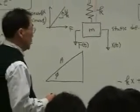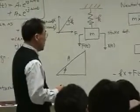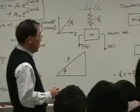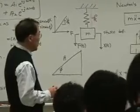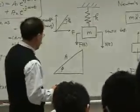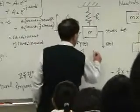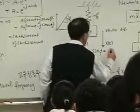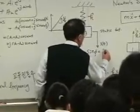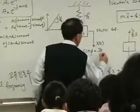A sine phi is x0, x0 divided by A. Sin phi is equal to x0 divided by A.